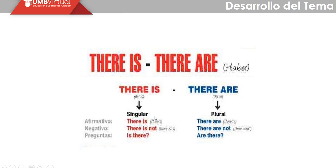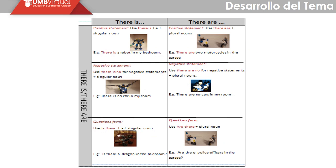Examples: 'There is no computer / laptop.' 'There are not classrooms.' 'There are not universities.' 'Is there a café in your neighborhood?' 'Are there shopping centers in your neighborhood?' Here you can see the use of 'there is' and 'there are' in more detail.